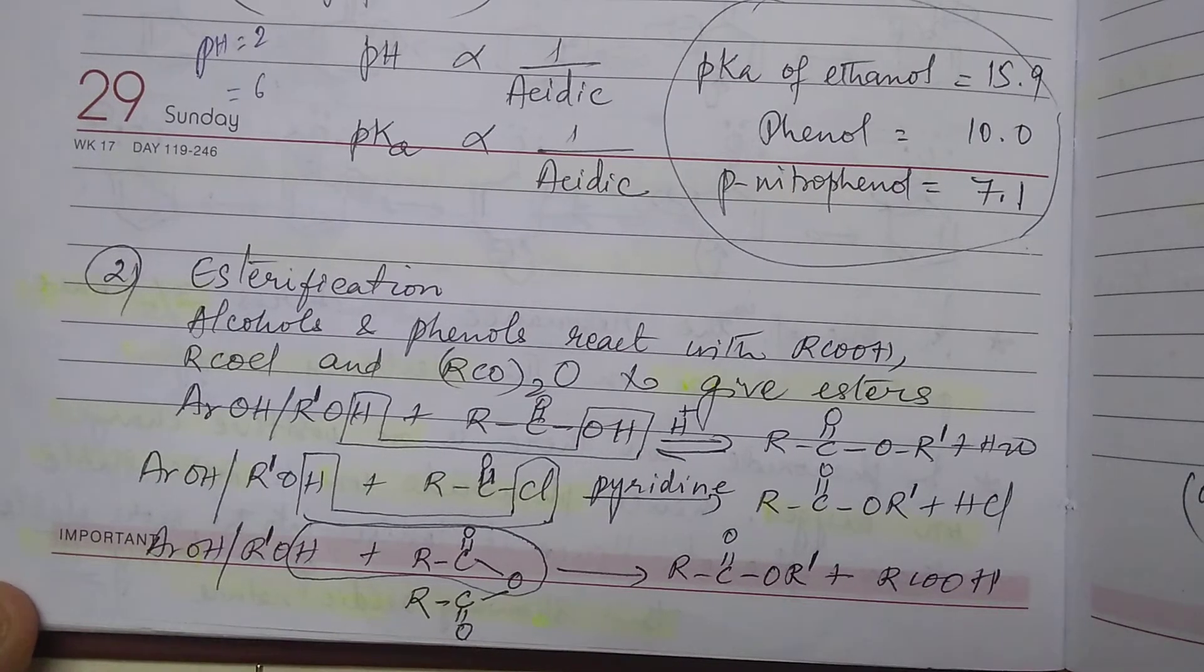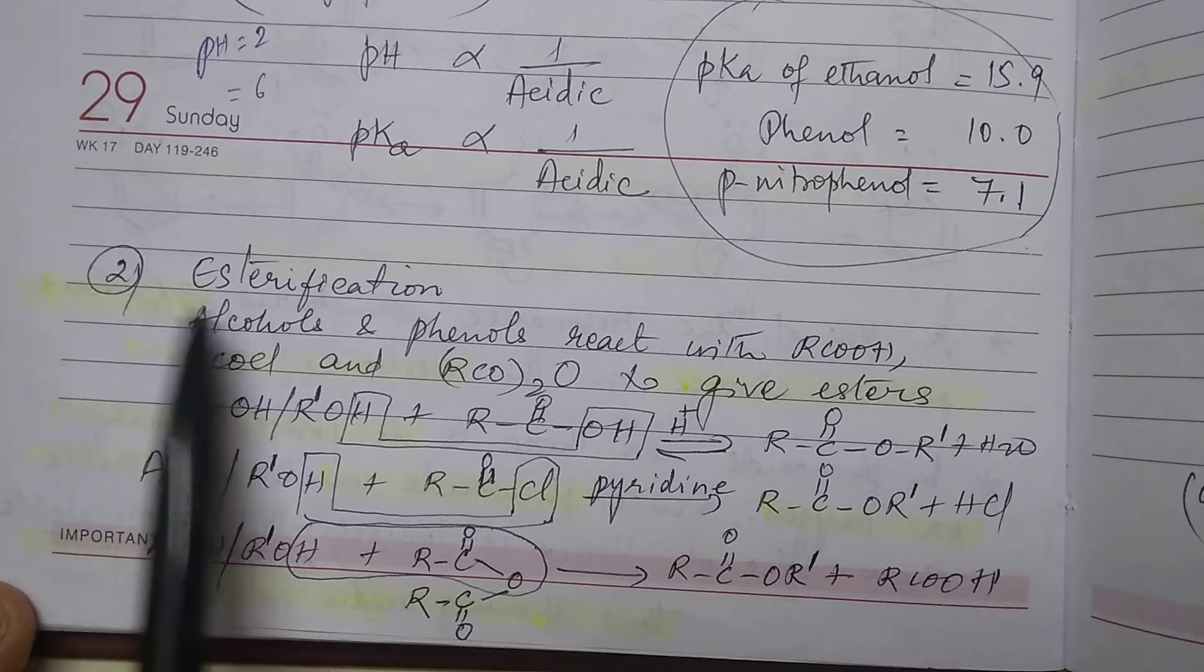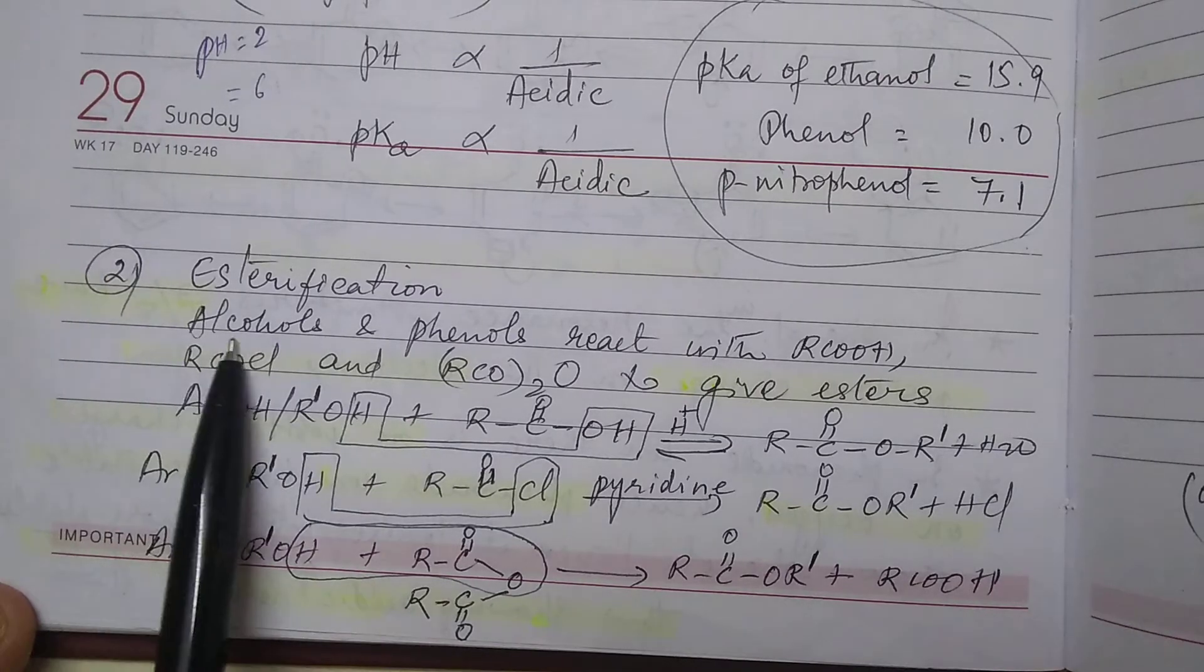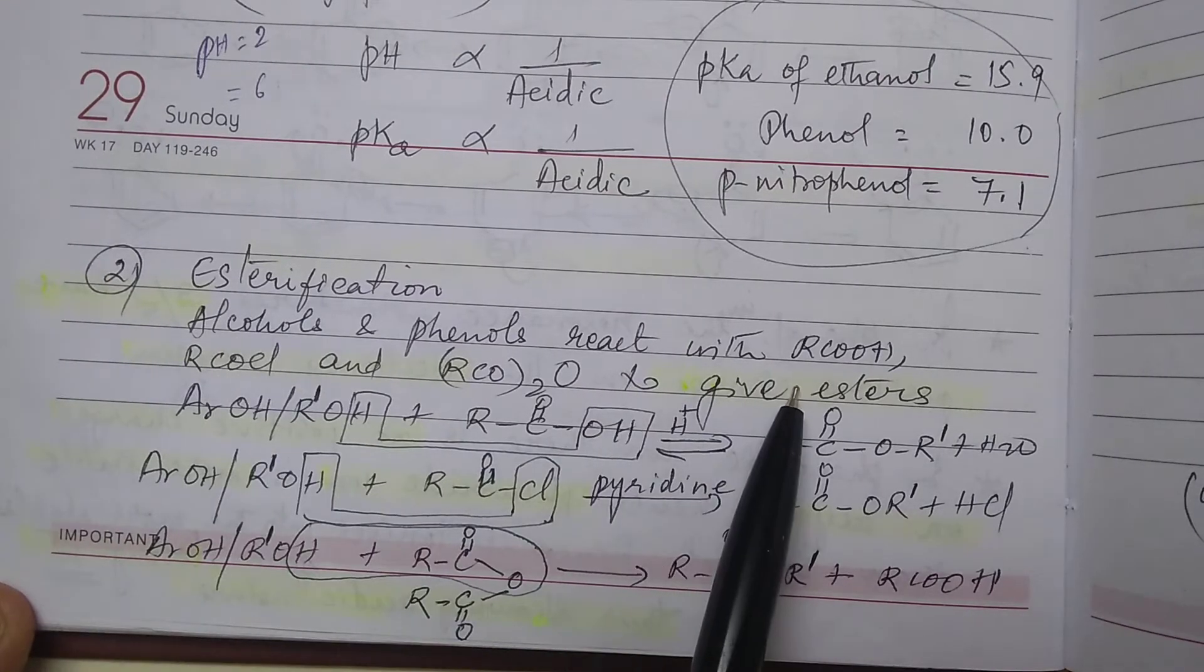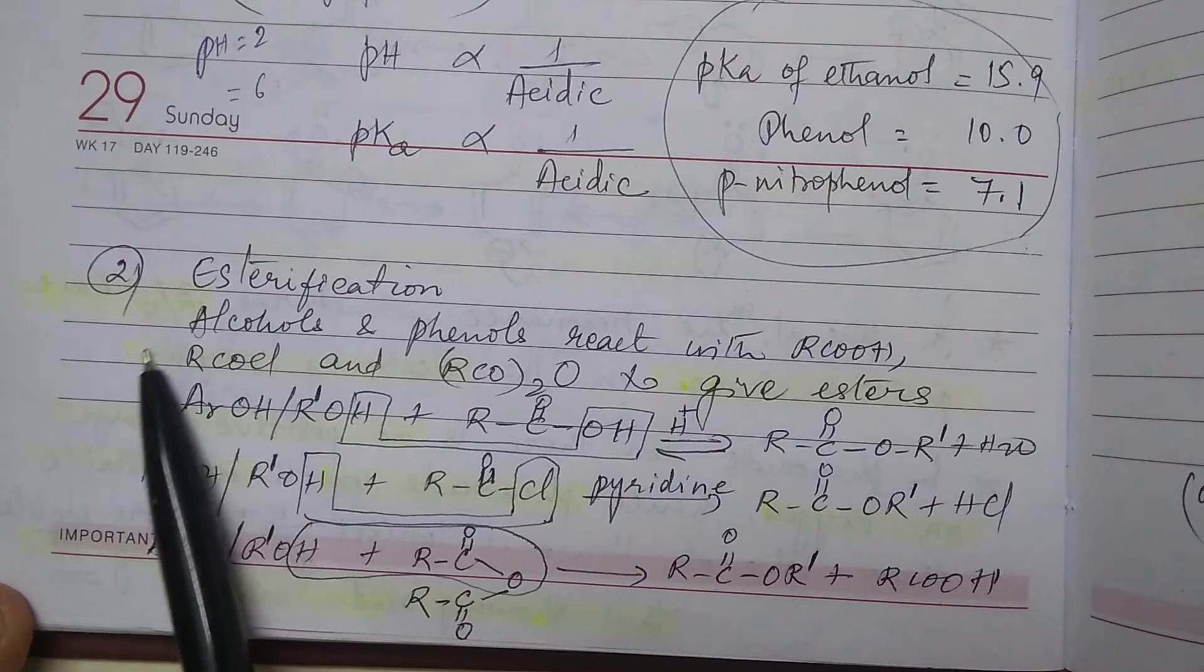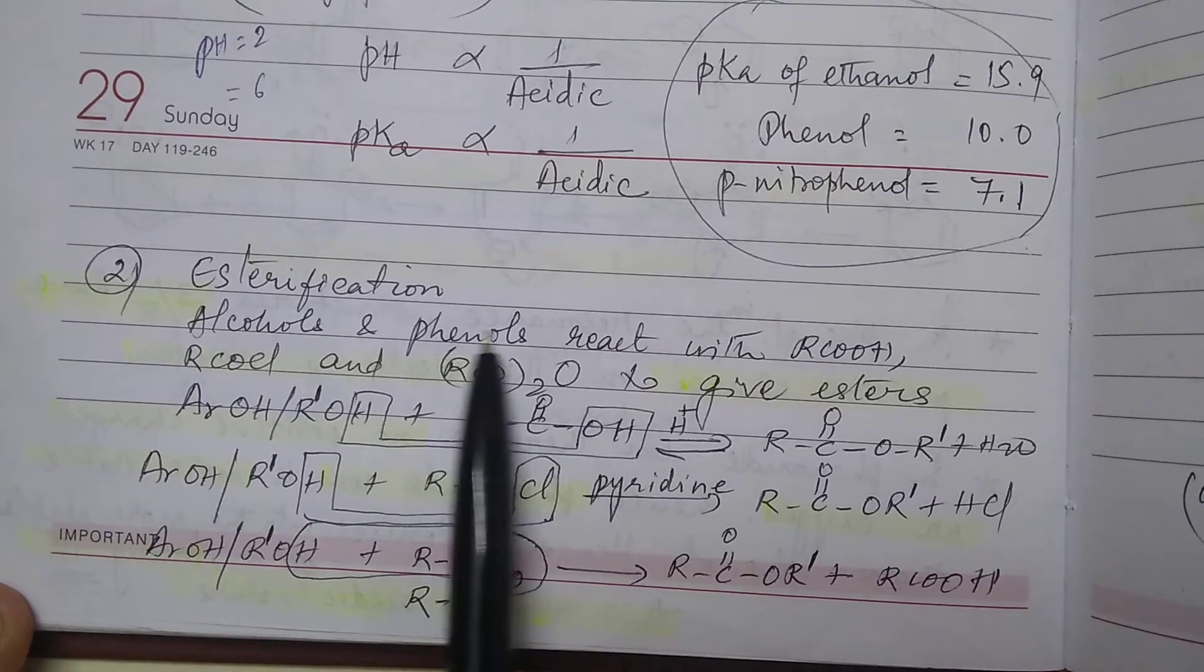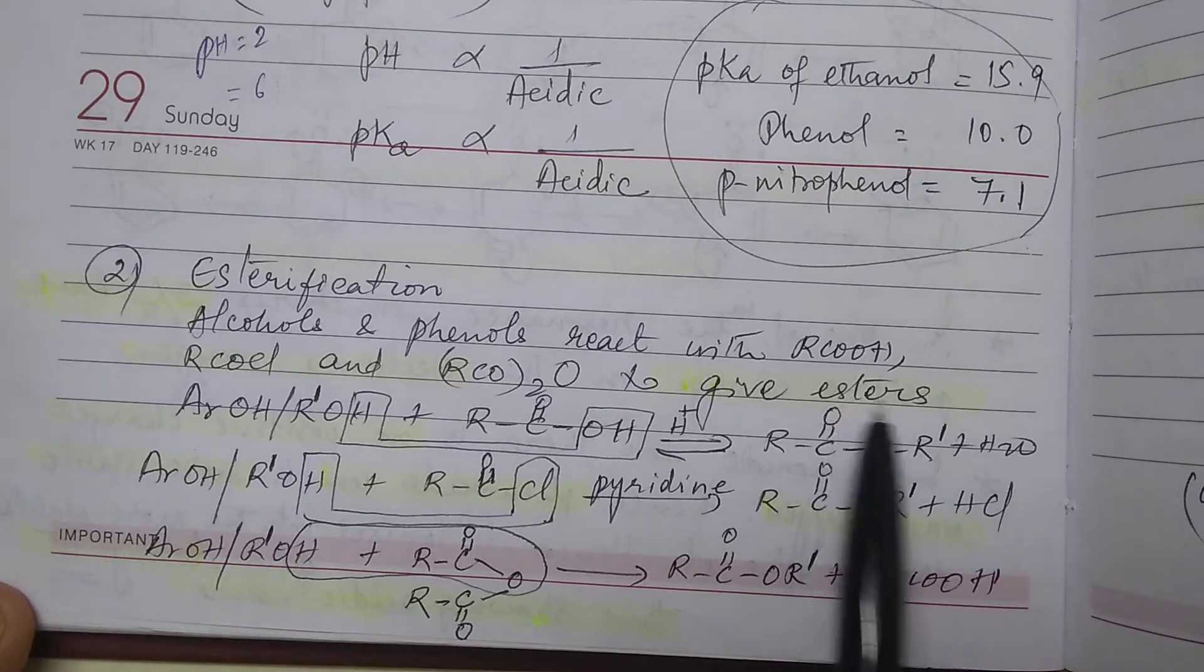To continue with OH cleavage, you have the next property that is esterification. Alcohols and phenols react with acid, alkanoyl chloride and acid anhydride to give esters.